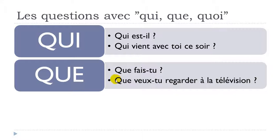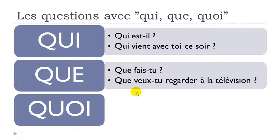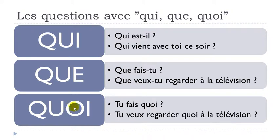Let's read it normally now. Que veux-tu regarder à la télévision? You can hear that I raise my voice a little bit at the end. And then the other option is QUOI. So QUOI also means WHAT, and you might wonder why we have both QUE and QUOI — there's a good reason.